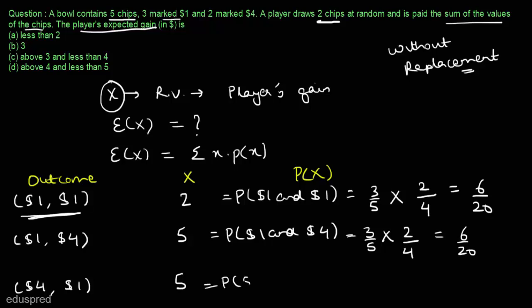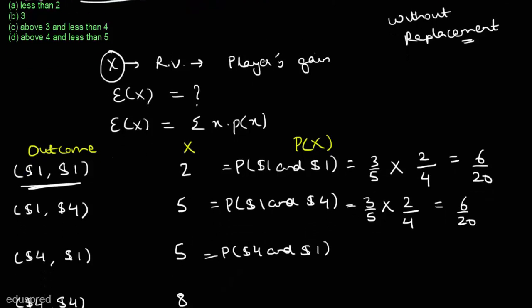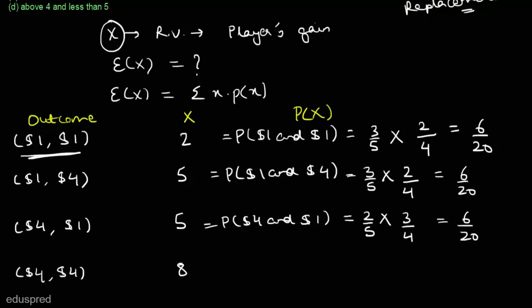For the outcome where the first chip is four dollars and the second is one dollar: the probability the first chip is four dollars is two divided by five, multiplied by the probability the second chip is one dollar, which is three divided by four — again giving six divided by twenty. For both chips marked four dollars: two divided by five times one divided by four equals two divided by twenty.